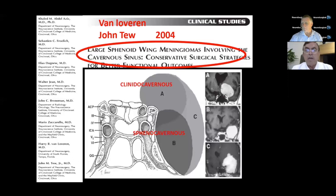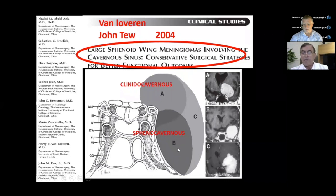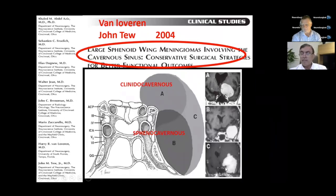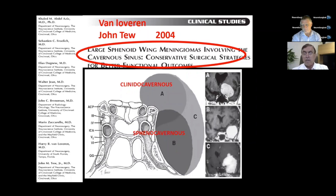This beautiful paper by John Cho from New York, 2004, describes this as clinoid-cavernous versus sphenocavernous, with overlap. It is sometimes difficult to differentiate one from the other — is this cavernous or anterior clinoid? Nevertheless, you need to know the anatomy and how to operate upon these structures.